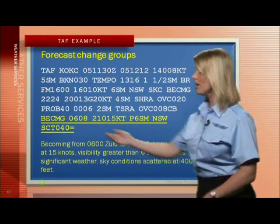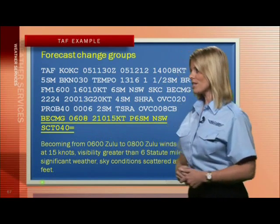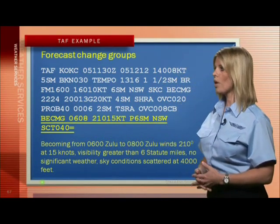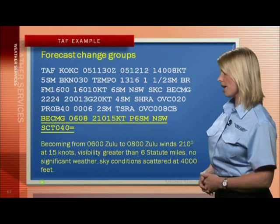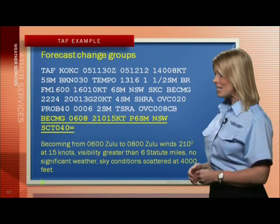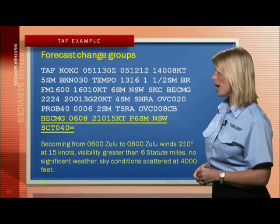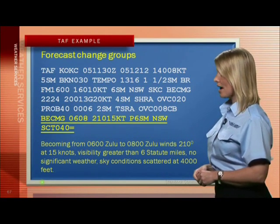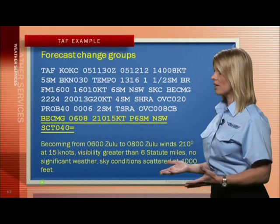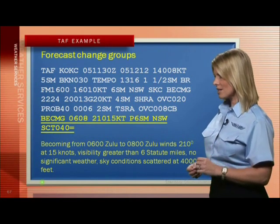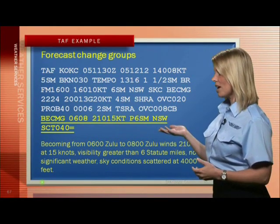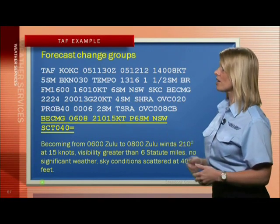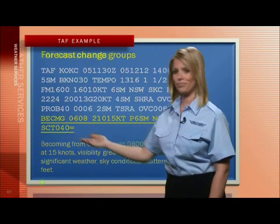Then becoming from 0600 Zulu to 0800 Zulu, winds 210 at 15 knots, visibility greater than 6 statute miles. Wind direction 210 degrees, wind speed 15 knots. No significant weather, NSW. Then sky conditions scattered at 4000 feet.